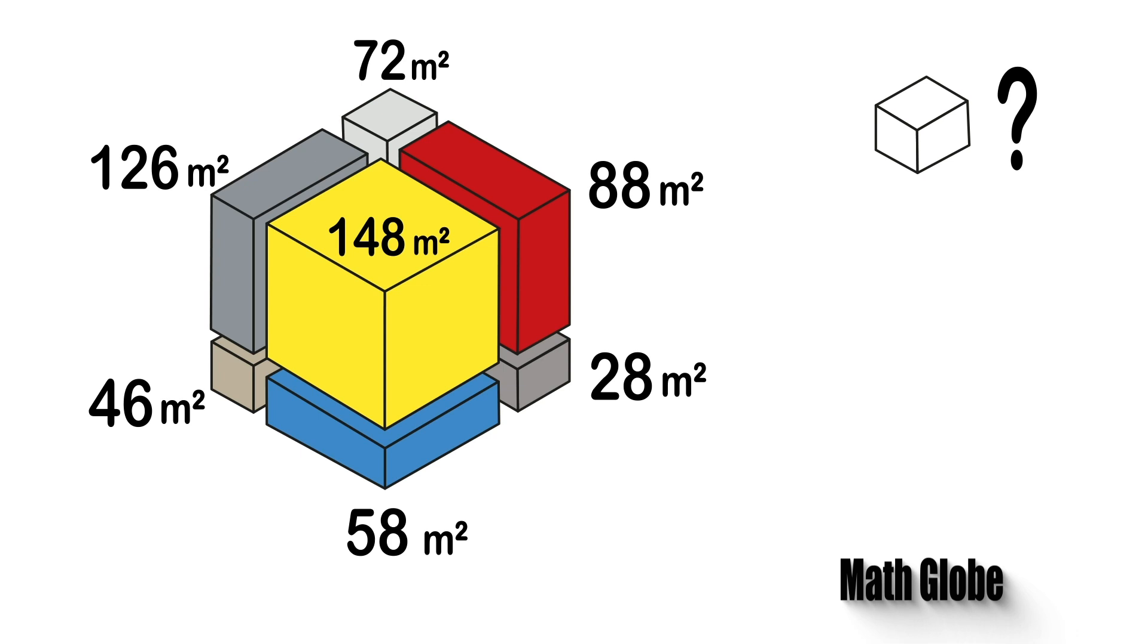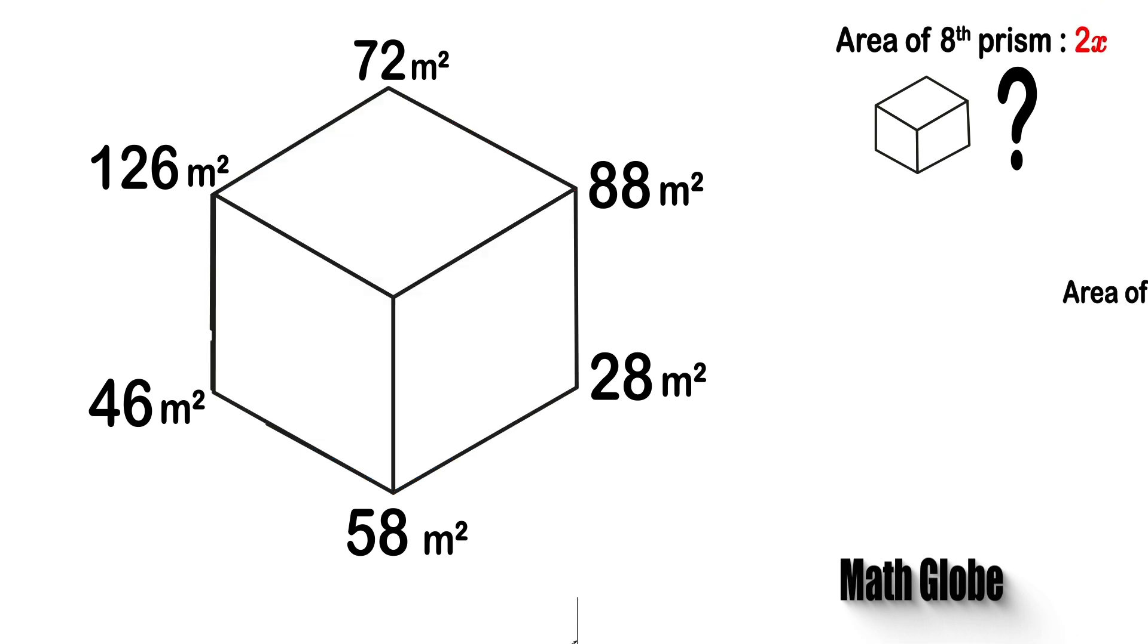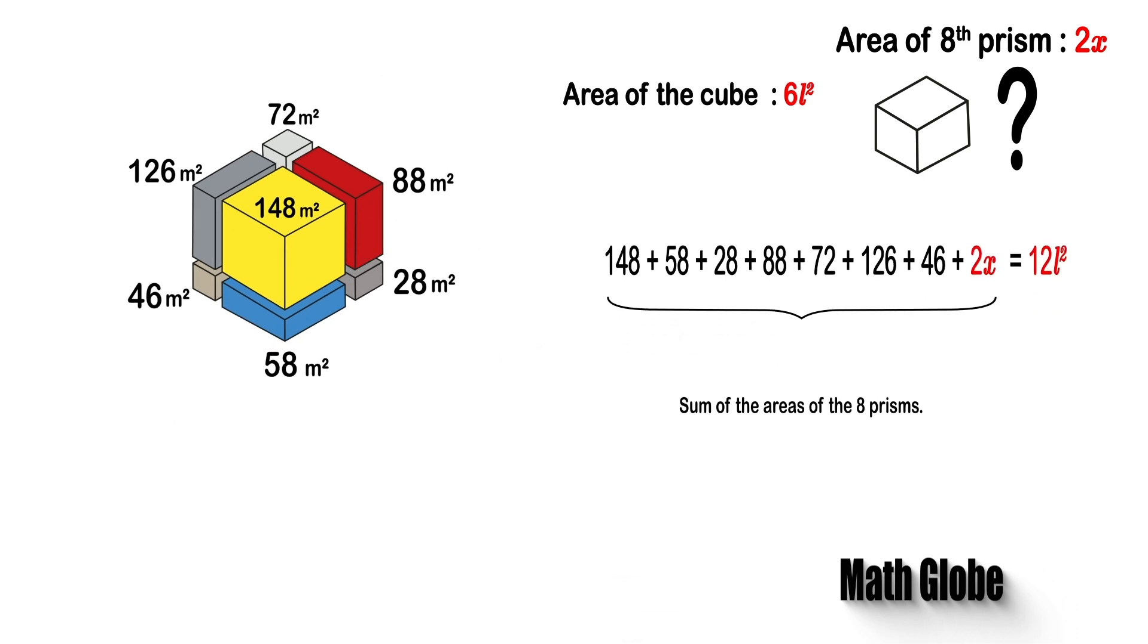Next, let's assume 2x as the area of the 8th prism, and L to be one edge of the cube. And then, let's calculate the total surface areas of the 8 prisms and the cube.